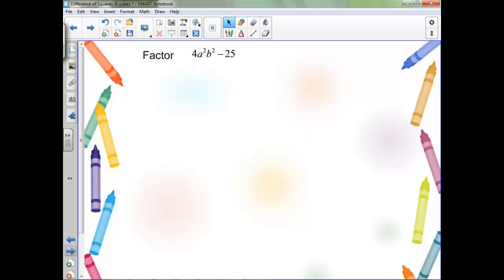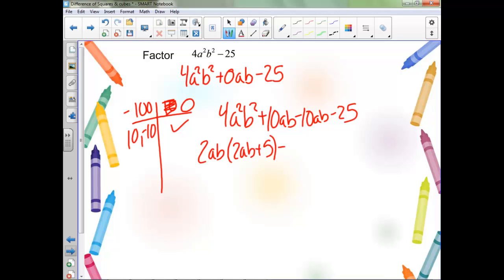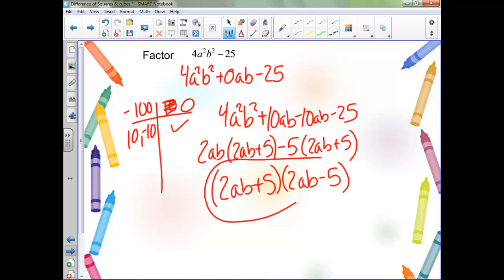We're going to do the same thing here and add a 0ab term in the middle. So we want to multiply to negative 100 and add to 0. So 10 and negative 10. And there we go.